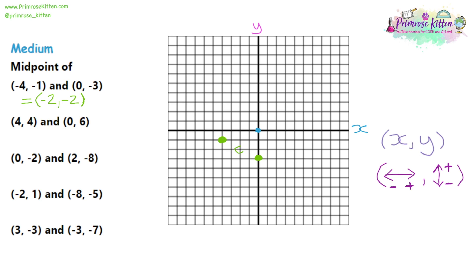Moving on to question 2, we have (4, 4) — both positive, so 4 to the right and 4 up — and (0, 6) — 0 across and 6 upwards. Join them with a line and identify the midpoint coordinate. The x-coordinate is 2 to the right, so positive 2. It is 5 upwards from the centre, and going up is always positive, so that's 5. So (2, 5) is in the middle of (4, 4) and (0, 6).